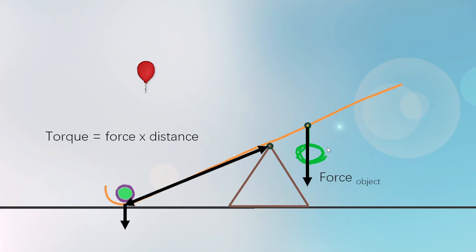This can be accomplished by adding a weight to the other side of the lever a certain distance from the fulcrum. If the torque applied to the lever by the added weight is not larger than the torque applied by the ball, the lever will not move.